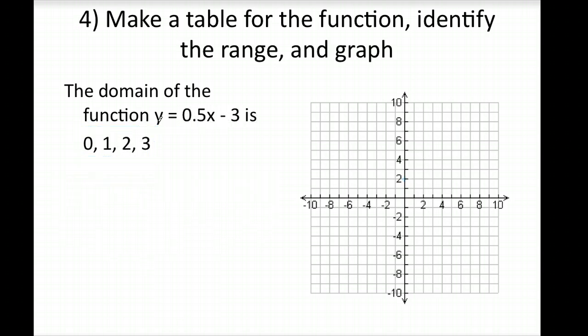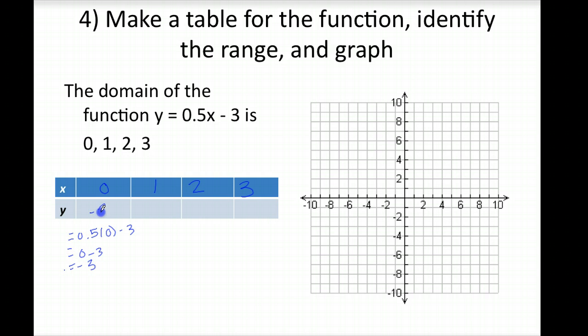Alright, for this fourth one, hit pause, work on it, and then come back. Alright, welcome back. Our table here, we're going to have 0, 1, 2, 3. Our y values, keep in mind, we're substituting in. So, here, we get 0.5 times 0 minus 3, which equals 0 minus 3. So, that y value is negative 3.